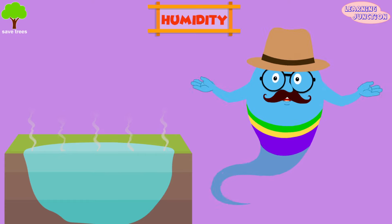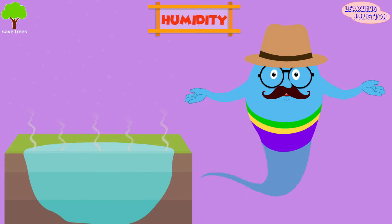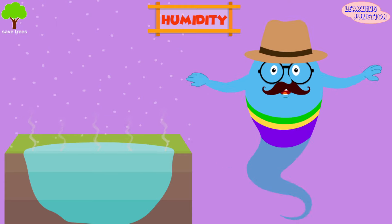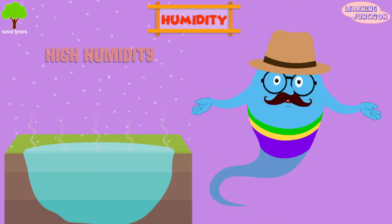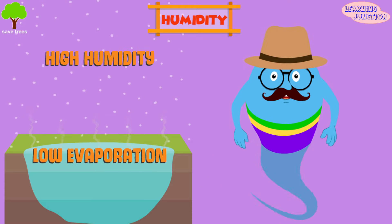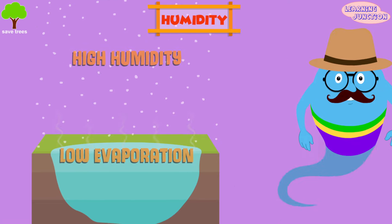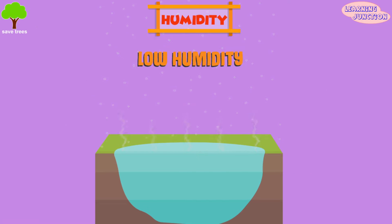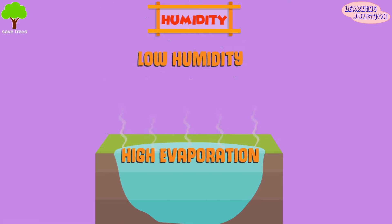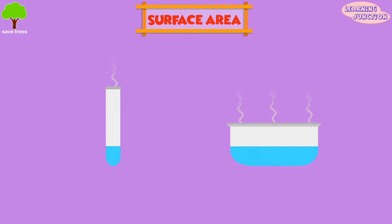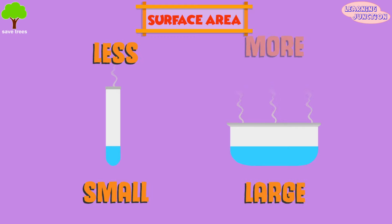Humidity also affects evaporation. We all know that air can hold water up to a certain amount. If the amount of water in the atmosphere is high, then the rate of evaporation will automatically decrease. Therefore, decreasing the humidity increases the rate of evaporation. Surface area is another factor — increasing the surface area also increases the rate of evaporation.